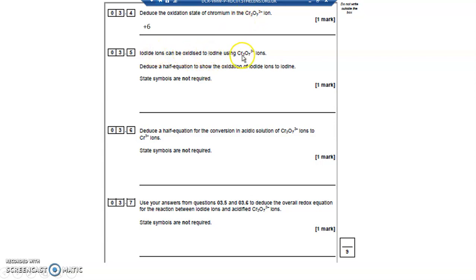Iodide ions can be oxidised to iodine using these ions. Deduce a half equation. So a half equation is just part of the equation. It's always got electrons in there. So iodide ions are I minus. Iodine is I2. I minus to I2. I'm going to need two I's, two I minuses to make the I2. And let's balance up the charges with electrons. Remember, half equations, you've always got electrons. Two minuses on the left, so I need two electrons on the right.